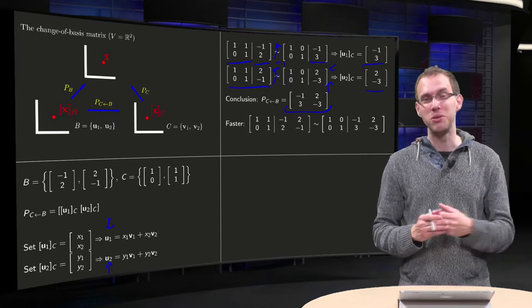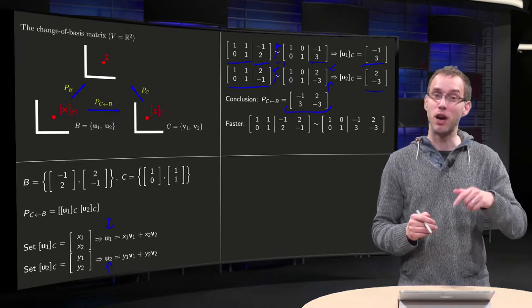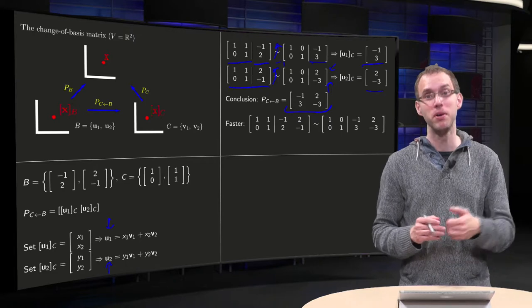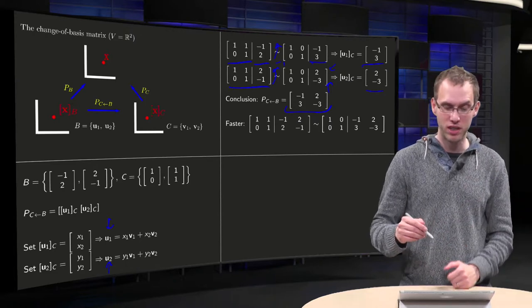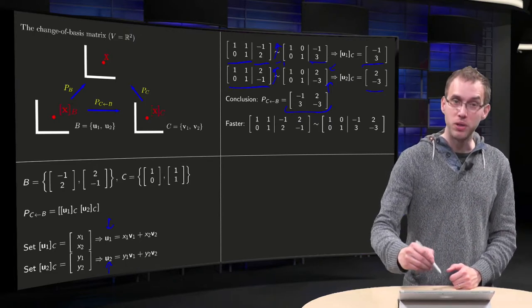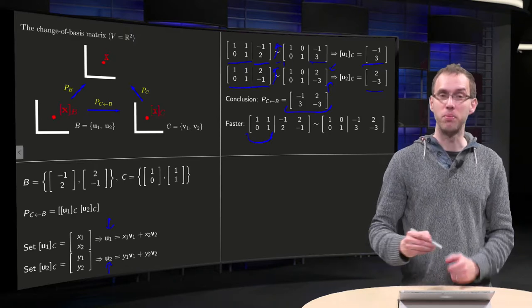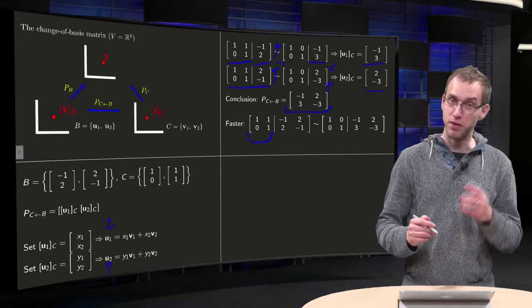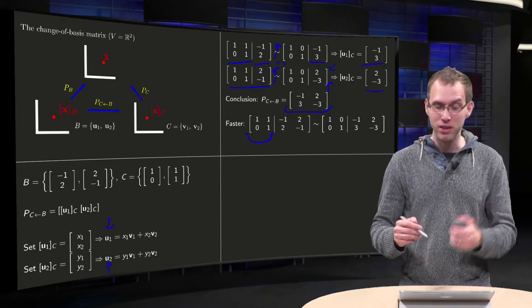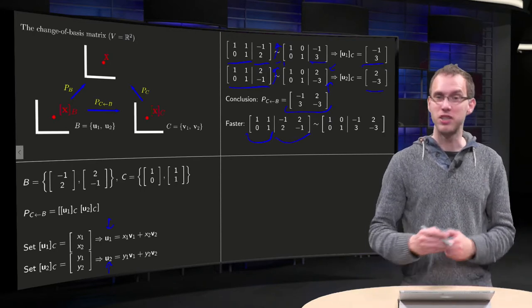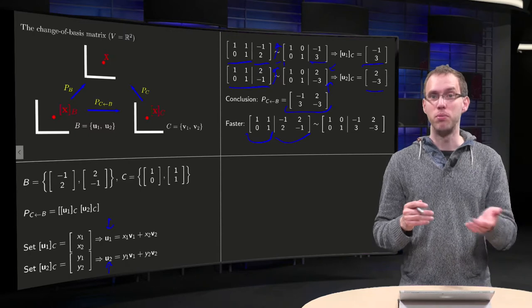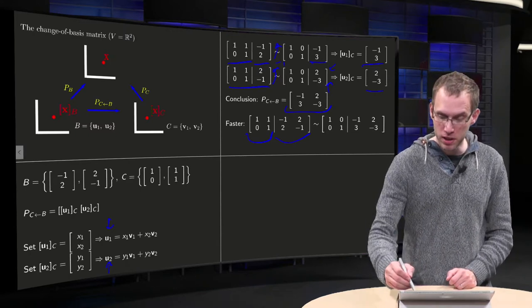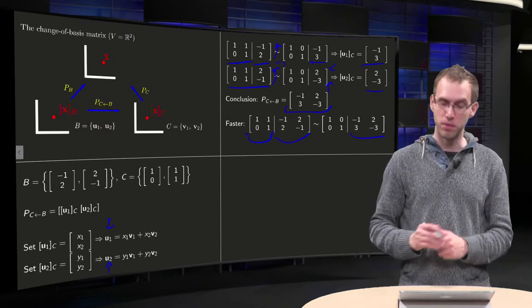But you already noticed that you can do this slightly faster, because you have to do the same row reduction step twice, but with different right hand sides. So what you can also do, is you form the augmented matrix with v1 and v2, and you augment with u1 and u2 at the same time. You do the same row reduction step, and then immediately you find your p from b to c.